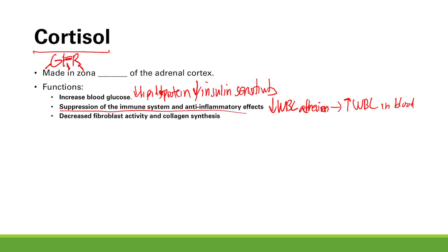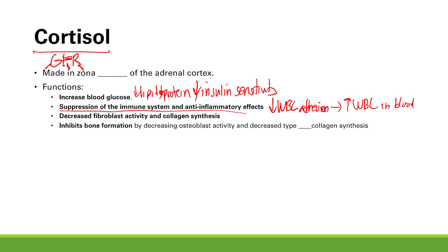Cortisol also decreases fibroblast activity and collagen synthesis. This is important because you need these for wound healing, so you get poor wound healing. You also get purple striae if you have too much cortisol. Next is inhibited bone formation — cortisol decreases osteoblast activity and decreases type 1 collagen, which is what you need for bone.